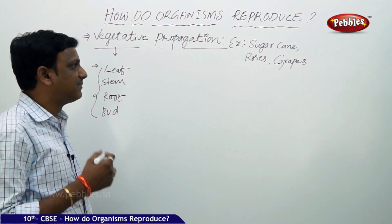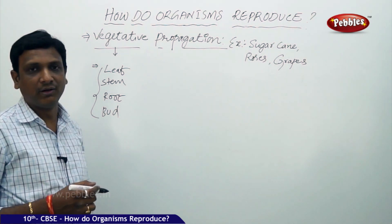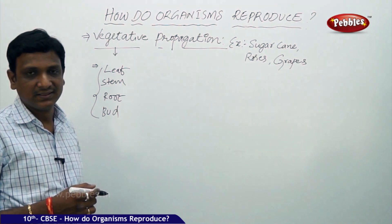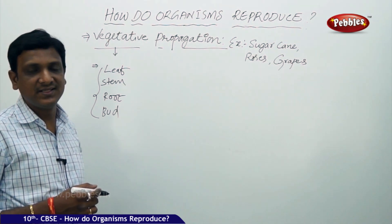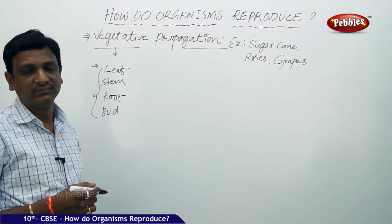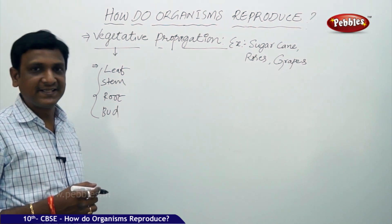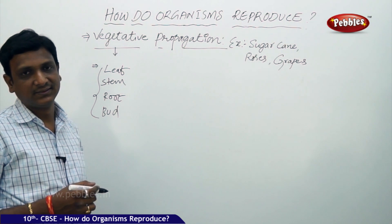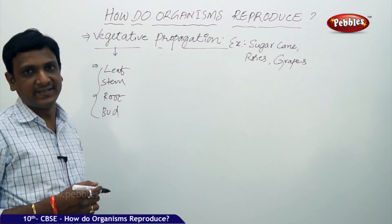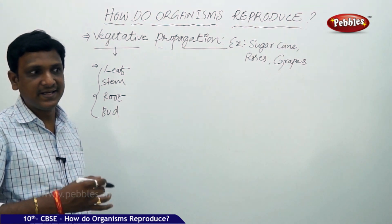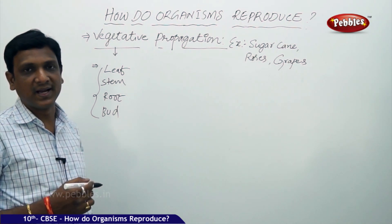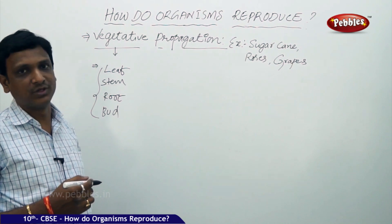Naturally, this may not happen in all cases. But artificially, in nurseries, if you practice it, you can get new plants identical to the parent plant within a very short period.